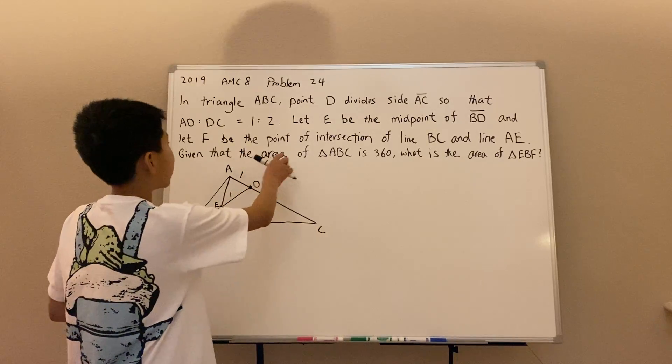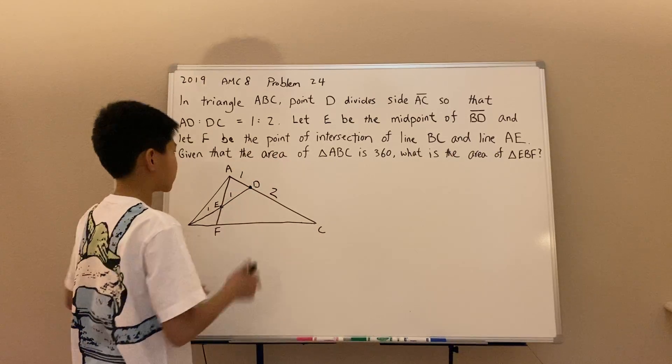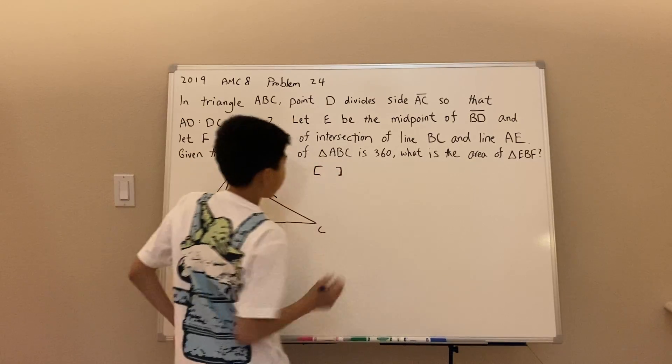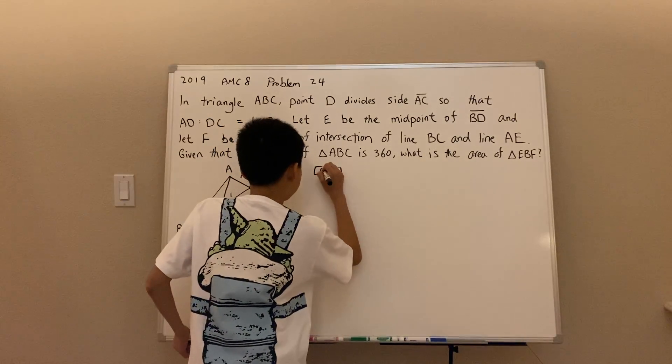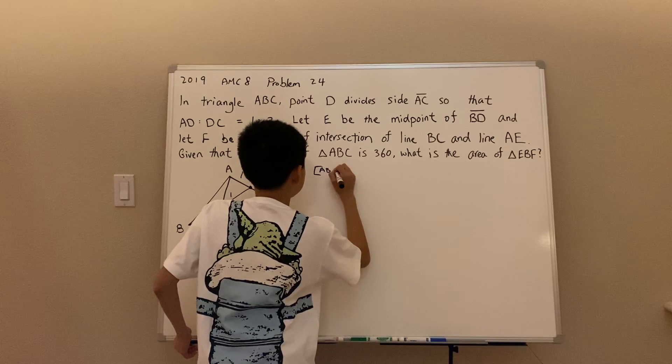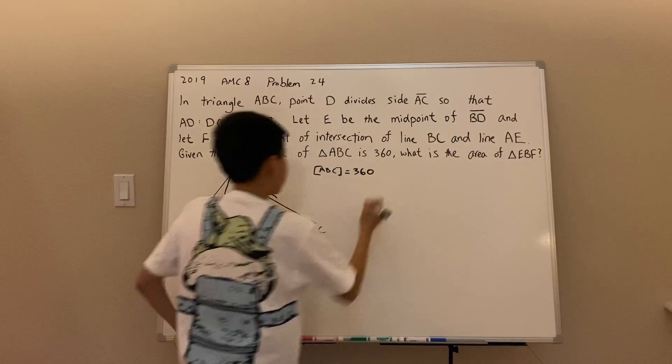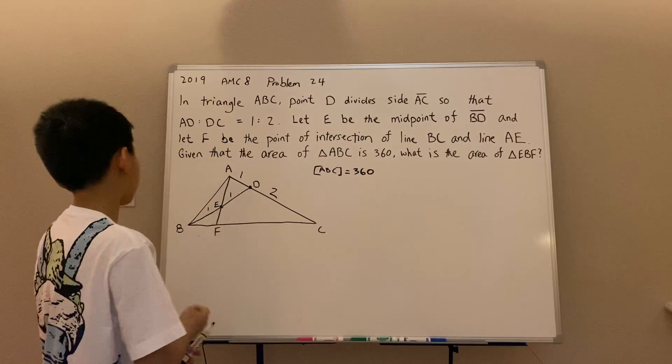It also gives us that the area of ABC is 360. So, for sake of simplicity, let the bracket notation denote the area of an object. And the area of ABC is equal to 360. And the problem is asking us to find the area of EBF.